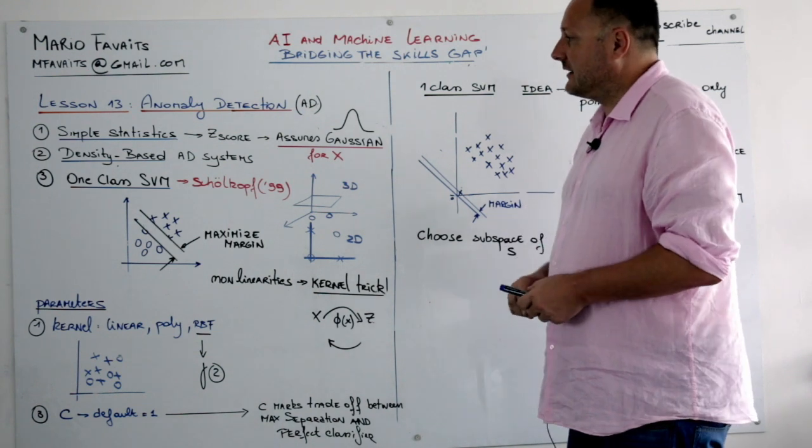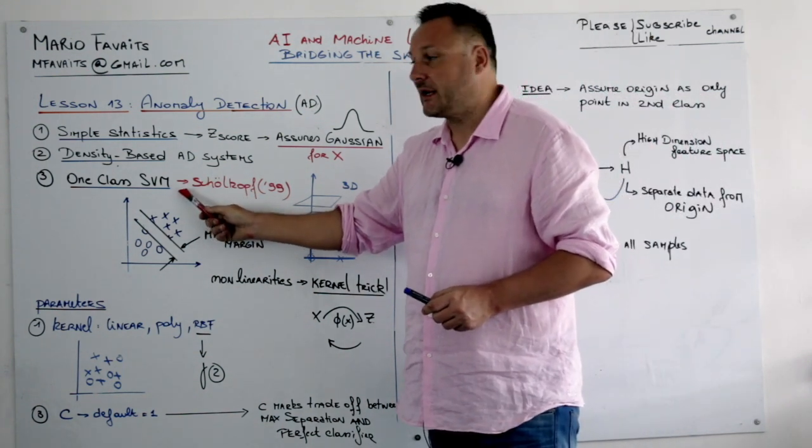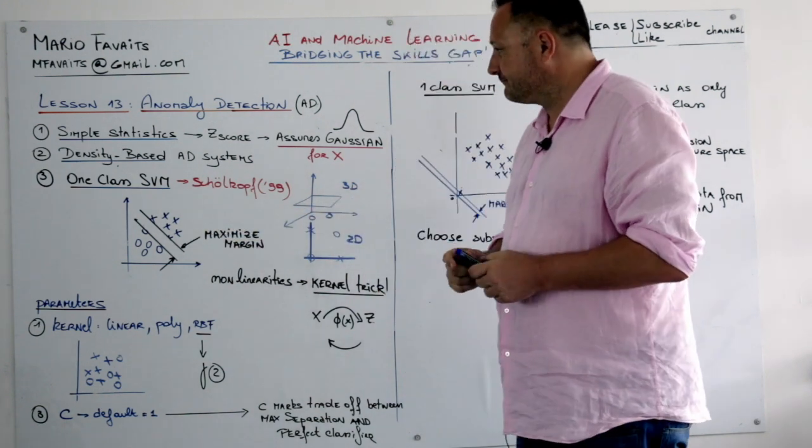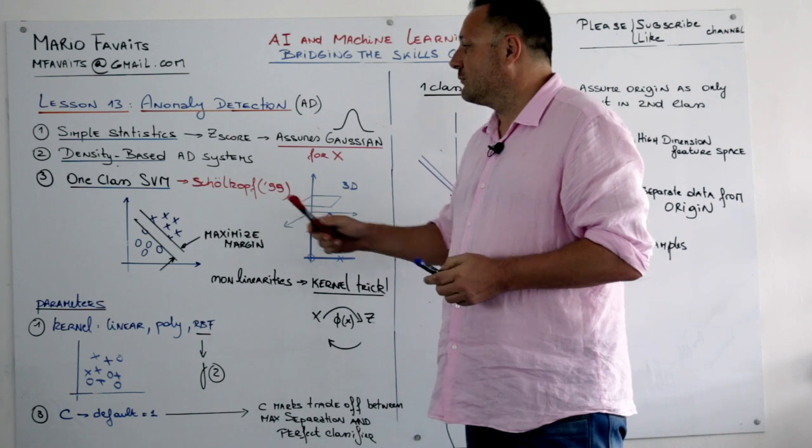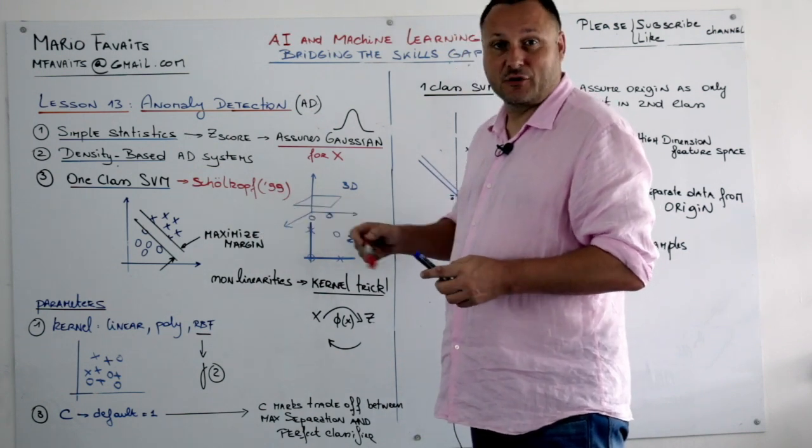Alright, let's now take a look at the third anomaly detection system which is one-class SVM. SVM we see in support vector machines and this one-class SVM was developed by Shilkov about 20 years ago, in 1999.